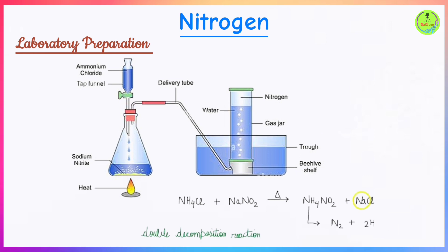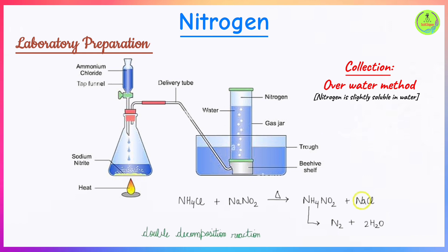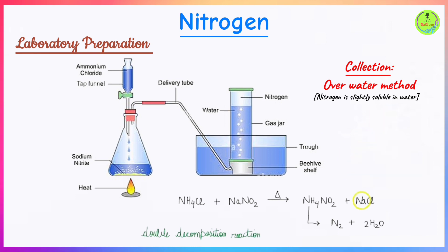The ammonium nitrite that has just been formed decomposes on heating to produce nitrogen gas and steam. Nitrogen gas is collected over water — this method is known as the over-water method. Gases collected this way must be either completely insoluble or only slightly soluble in water, as nitrogen is.